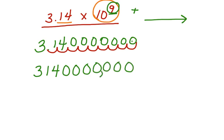We can put our commas in, and we have 3,140,000,000. That's what's represented in this value.